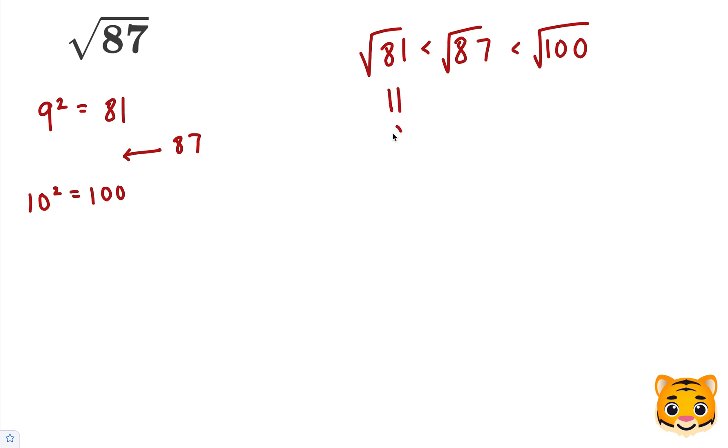The square root of 81 then turns into 9 because 9 squared is 81. The square root of 100 then turns into 10 because 10 squared is 100. Now we can see that the square root of 87 lies between 9 and 10. However, 87 is a lot closer to 81 than it is to 100, so the square root of 87 will be closer to 9 compared to 10.